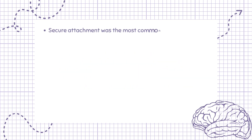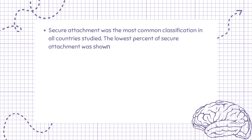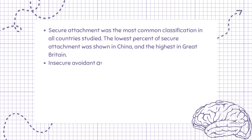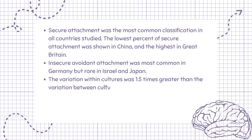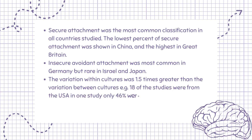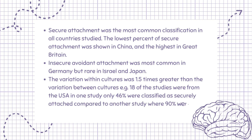Secure attachment was the most common classification in all countries studied. The lowest percentage of secure attachment was shown in China and the highest in Great Britain. Insecure-avoidant attachment was most common in Germany but rare in Israel and Japan. The variation within cultures was 1.5 times greater than the variation between cultures. For example, 18 of the studies were from the USA; in one study only 46% were classified as securely attached compared to another where 90% were classified as securely attached.